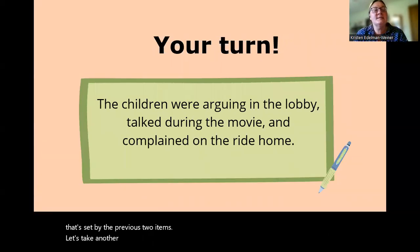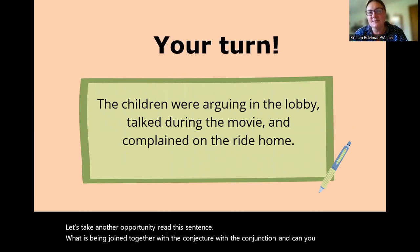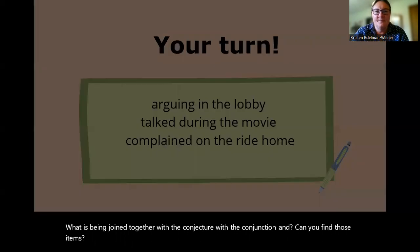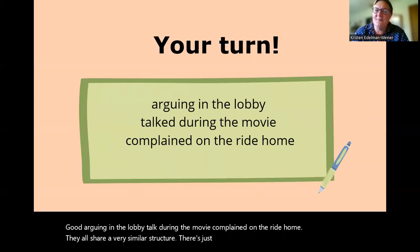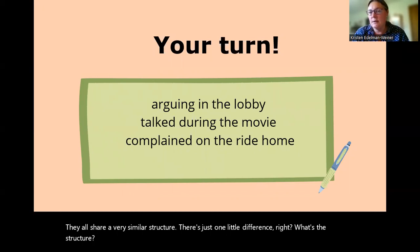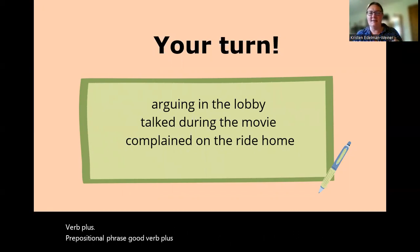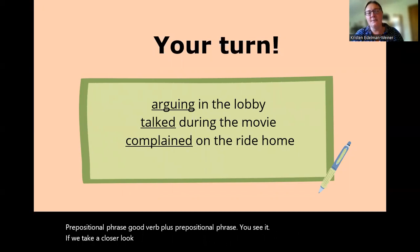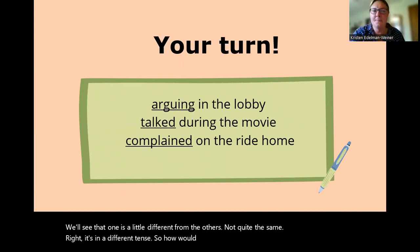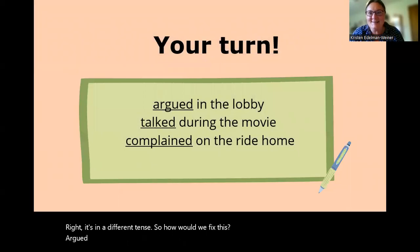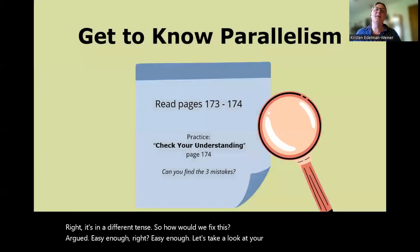Let's take another opportunity. Read this sentence. What is being joined together with the conjunction 'and'? Can you find those items? Good. Arguing in the lobby, talk during the movie, complained on the ride home. They all share a very similar structure. There's just one little difference. What's the structure? Verb plus prepositional phrase. Good, verb plus prepositional phrase. You see it. We take a closer look at the verbs, however, we'll see that one is a little different from the others, not quite the same, right? It's in a different tense. So how would we fix this? Argued. Easy enough, right?